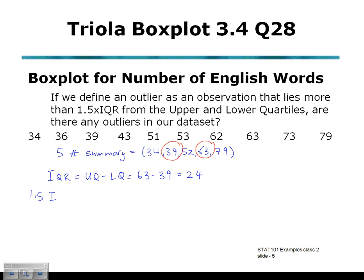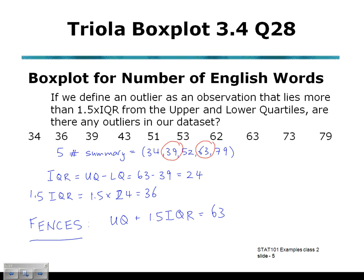We've defined outliers as any values beyond 1.5 times the interquartile range. So our next step is to multiply: 1.5 times the interquartile range of 24 gives us a value of 36. On the upper side, we take the upper quartile of 63 and add that 36, giving us a fence value of 99 on the upper side.